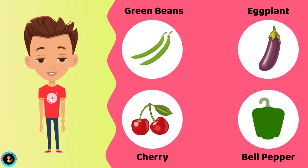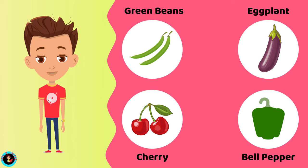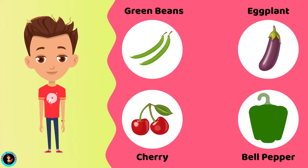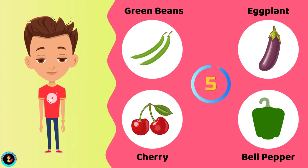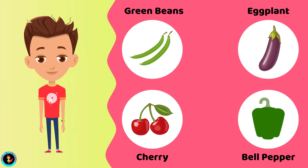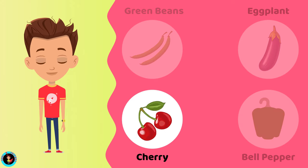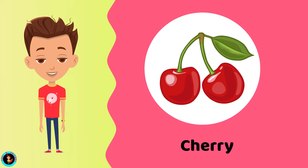Which among these is a fruit? Green beans. Eggplant. Cherry. Bell pepper. The right answer is Cherry. Cherry is a fruit.